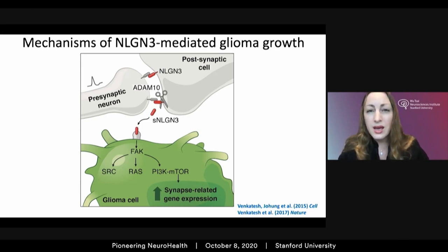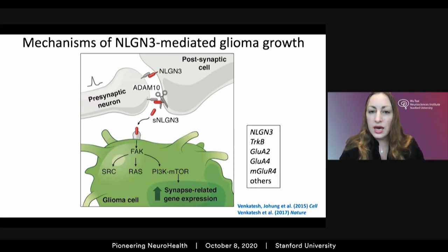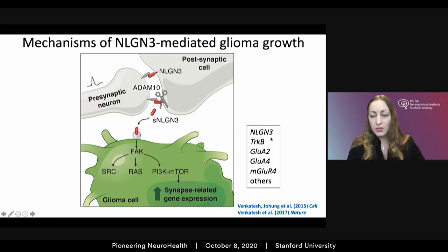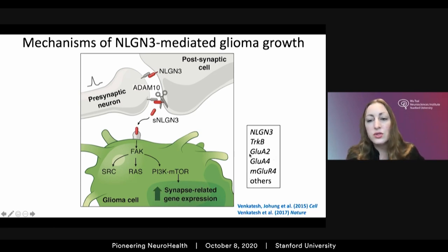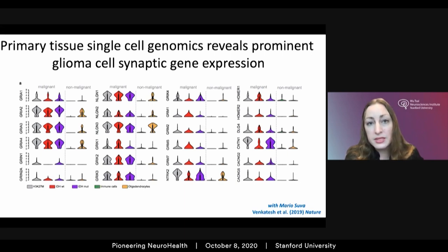This helps us understand how Neuroligin-3 functions as a mitogen, but it doesn't explain the unexpected dependency. So we dug deeper and looked at gene expression changes attributable to Neuroligin-3 exposure. We found a host of synapse-related genes regulated by Neuroligin-3 binding: a feed-forward effect on its own expression, upregulation of the BDNF receptor TrkB, a number of different glutamate receptor subunits, and other synapse-associated structural proteins.